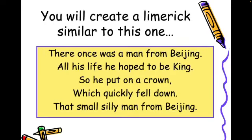Now let's take a look at a limerick and think about how you can create one of your own. Here's one that will be similar to yours: "There once was a man from Beijing. All his life he hoped to be king. So he put on a crown which quickly fell down — that small silly man from Beijing."